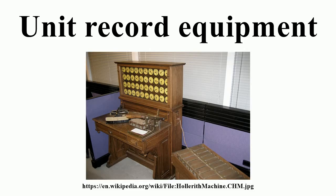In 1931, IBM introduced the Model 600 multiplying punch. The ability to divide became commercially available after World War II. The earliest of these calculating punches were electromechanical; later models employed vacuum tube logic. Electronic modules developed for these units were used in early computers, such as the IBM 650. The Bull Gamma 3 calculator could be attached to tabulating machines, unlike the stand-alone IBM calculators. For more details, see IBM 602 Calculating Punch, IBM 603 Electronic Multiplier, IBM 604 Electronic Calculating Punch, IBM 608 Calculator, IBM Card Programmed Electronic Calculator and Remington Rand 409.